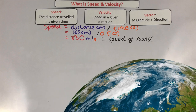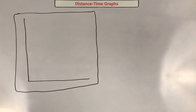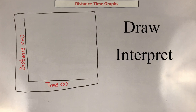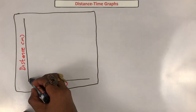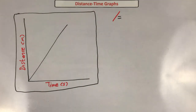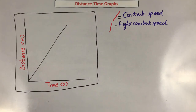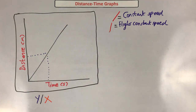You can work out the speed of an object from a distance-time graph. You are expected to draw and interpret different lines and slopes in this type of graph. A straight line going up means the object is traveling at a constant speed — a steeper line means a higher constant speed. Finding the speed from a straight line uses the gradient: y over x, which is distance over time, giving you speed.